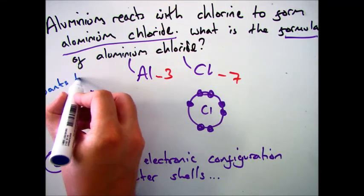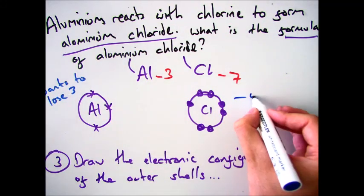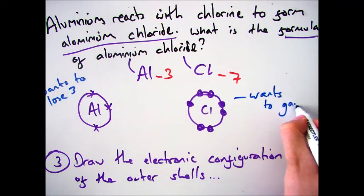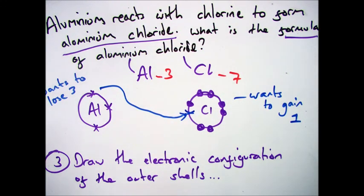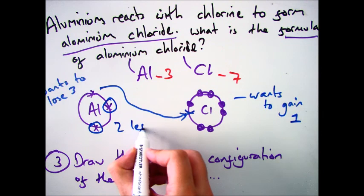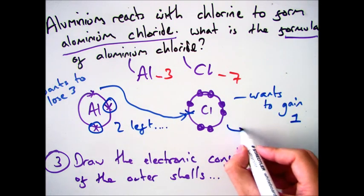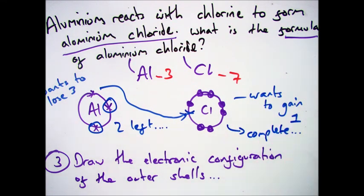So the next thing you need to know is what they want to do. Aluminum wants to lose 3 electrons and chlorine wants to gain 1. Now you know from the previous videos that aluminum will give its electrons to chlorine. However, there's still two left.